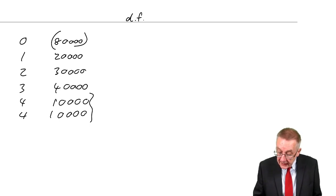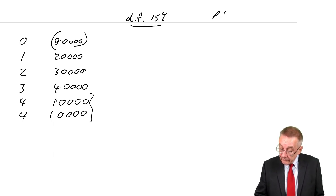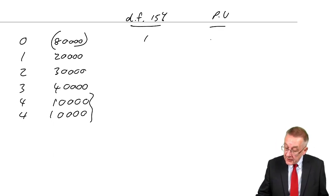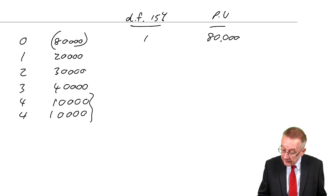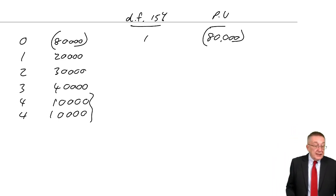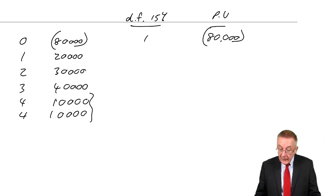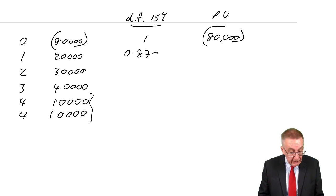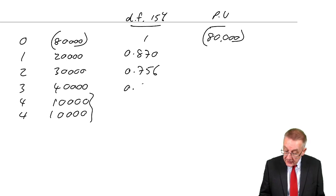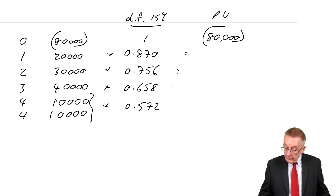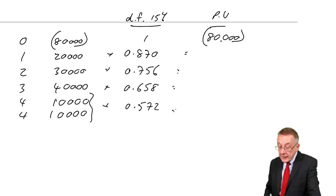So let's see what the NPV is at 15%. We know the cash flows. It's 80,000 outflow at time 0, inflows of 20,000, 30,000, 40,000, 10,000, but then another 10,000 at time 4 from the scrap. So those are the cash flows. This time we're discounting at 15% to get the present value. So 80,000 now is 80,000. Now the discount factors from your tables, the 15% column.